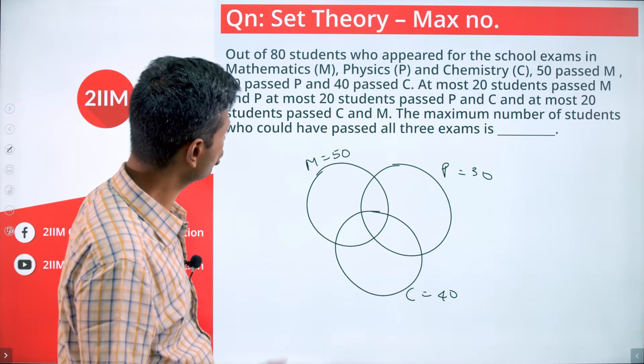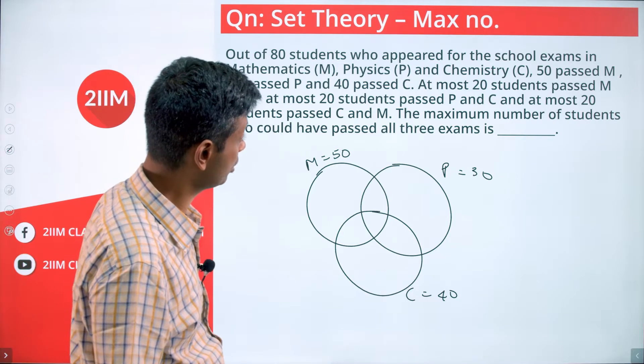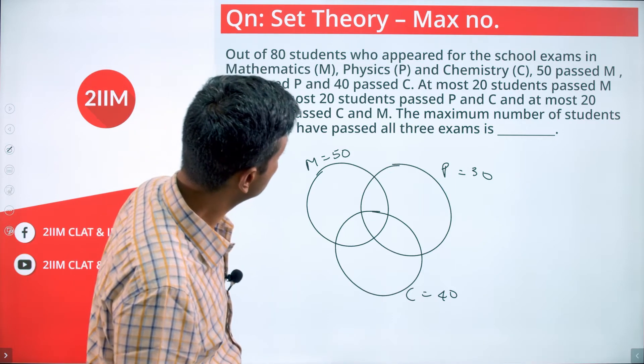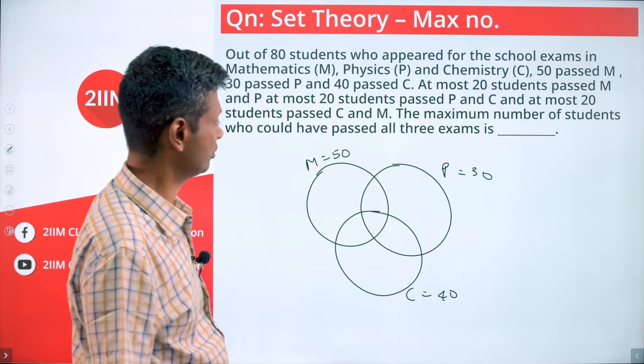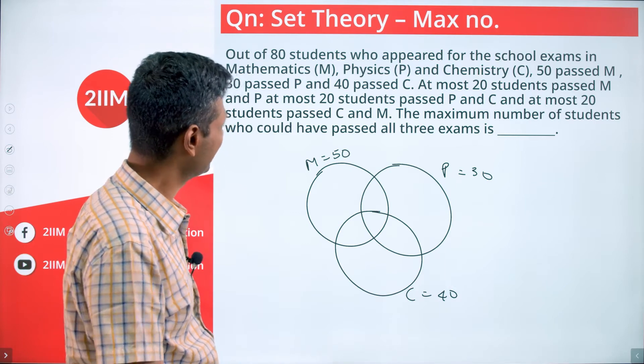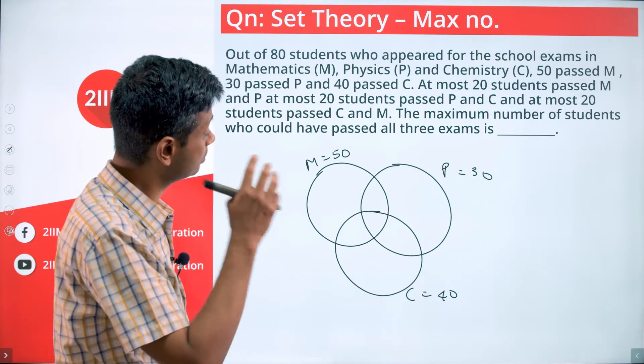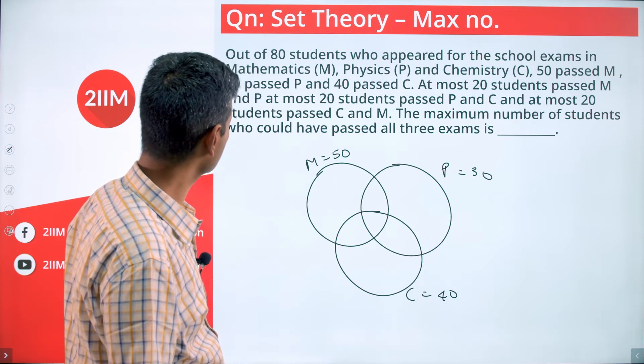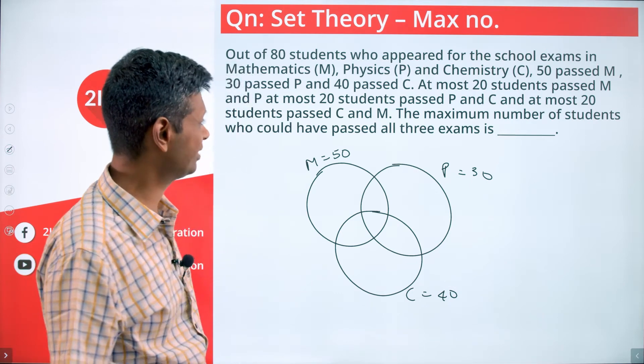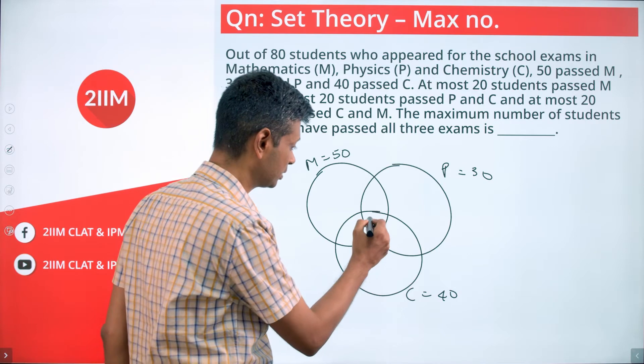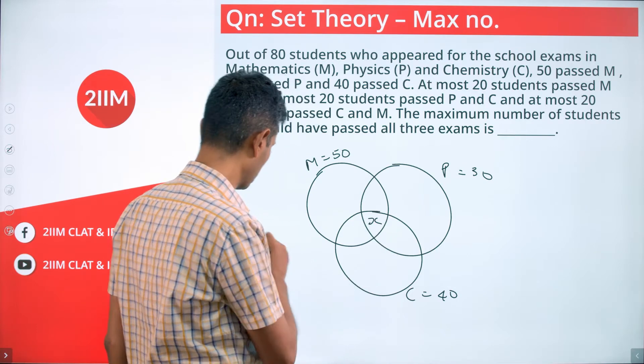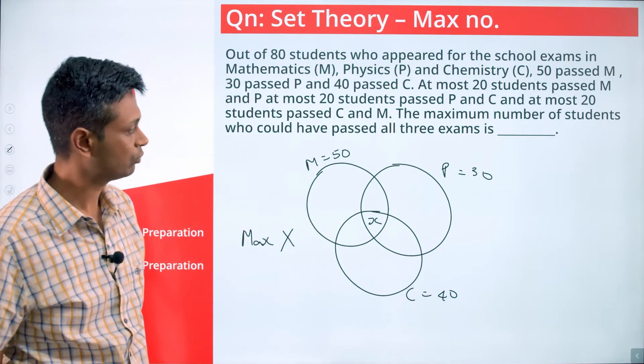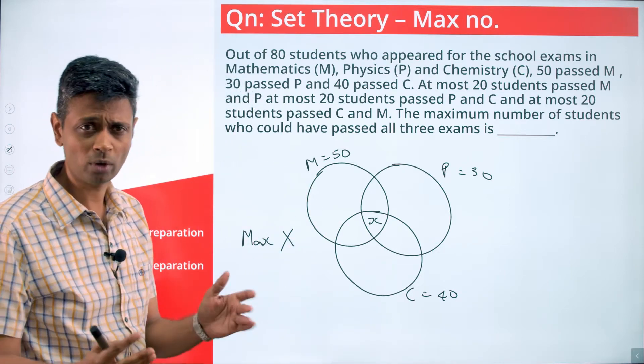At most 20 students passed physics and chemistry, at most 20 students passed chemistry and math, at most 20 students passed math and physics. The intersection is a maximum of 20. The maximum number of students who could have passed all three exams - so let's call this x. We want to find the maximum value of x. We have a wonderful formula.